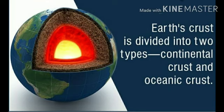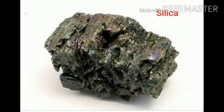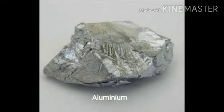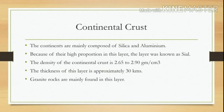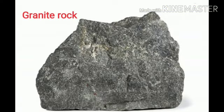Continental crust: the continents are mainly composed of silica and aluminum. Because of the high proportion of these elements in this layer, it was earlier known as sial. The density of continental crust is 2.65 to 2.90 grams per cubic centimeter. The thickness of this layer is approximately 30 kilometers. Granite rocks are mainly found in this layer.